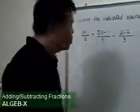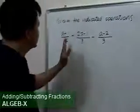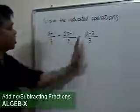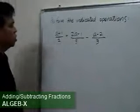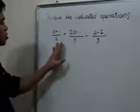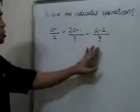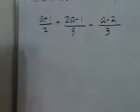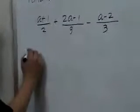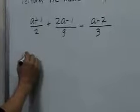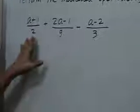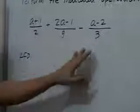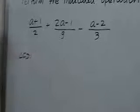This next problem involves addition and subtraction of fractions. Since the denominators are not the same — we have a 2, a 9, and a 3 — we will have to look for the least common denominator, which is nothing but the least common multiple of the denominators involved.